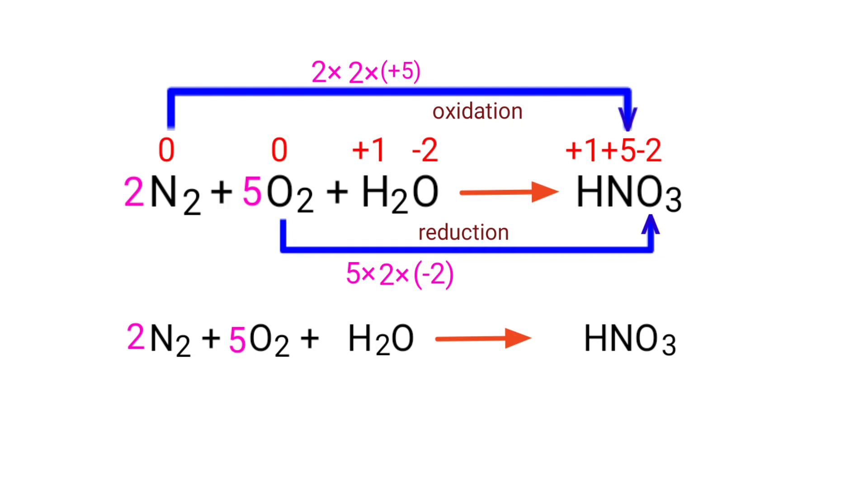Now you can balance the number of atoms in this equation. In the reactants side there are 4 nitrogen atoms, 11 oxygen atoms, and 2 hydrogen atoms present. And in the products side there are 1 nitrogen atom, 3 oxygen atoms, and 1 hydrogen atom present.